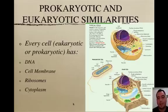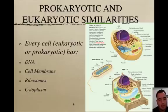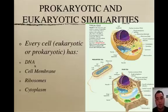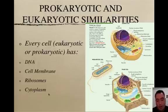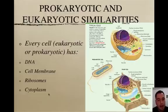Now let's look at prokaryotic and eukaryotic similarities. Every cell must have the following — whether prokaryote or eukaryote, it doesn't matter: they all have DNA to control their processes; they must have a cell membrane to control what goes in and out; they must have ribosomes to build proteins; and they must have cytoplasm, which is the liquid containing water, dissolved nutrients, and enzymes important for nutrition and cellular reactions.